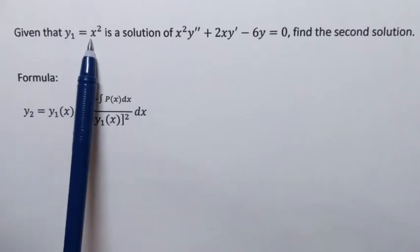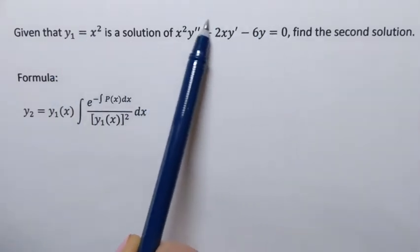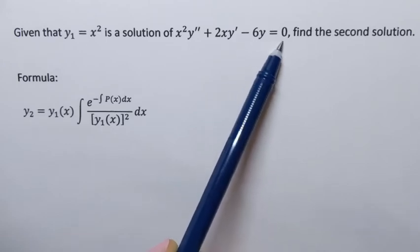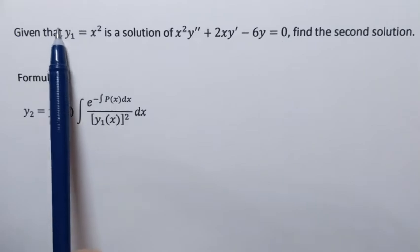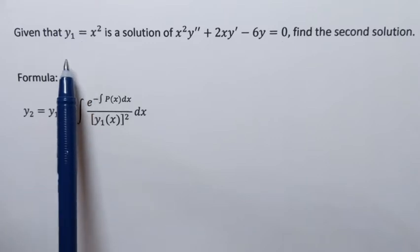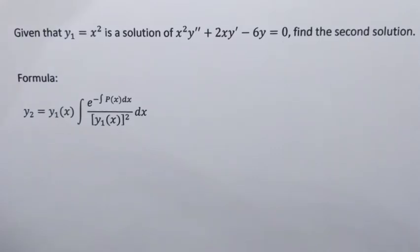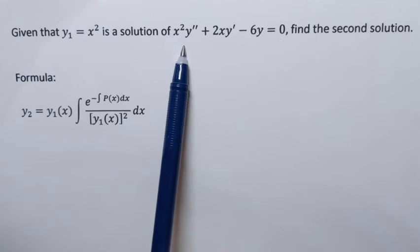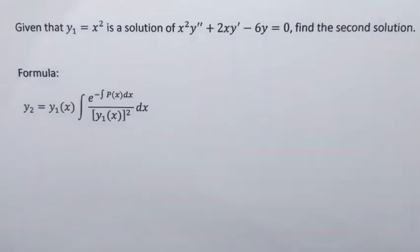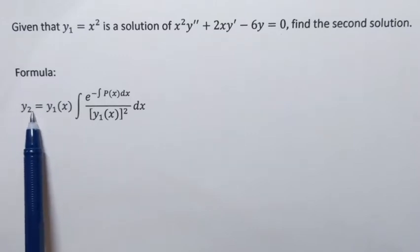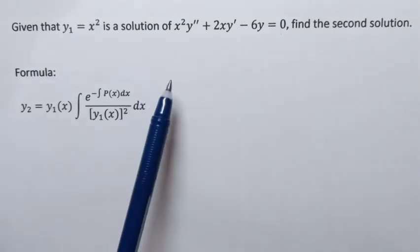In this example, we're given that y1 equals x squared. This function is a solution of the following homogeneous linear second order differential equation: x squared y double prime plus 2x y prime minus 6y equals 0, and we need to find the second solution. Notice that this is a particular solution — it's free of arbitrary constants — so we need to find another second solution like that. The process used to find a second solution consists of reducing the order, going from the second order differential equation to the first order, and applying a formula to find y2.